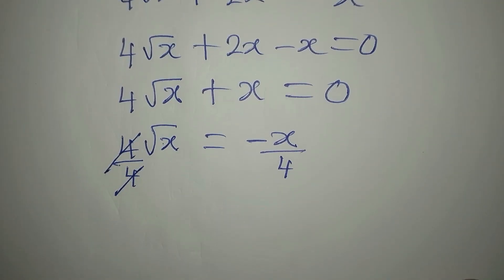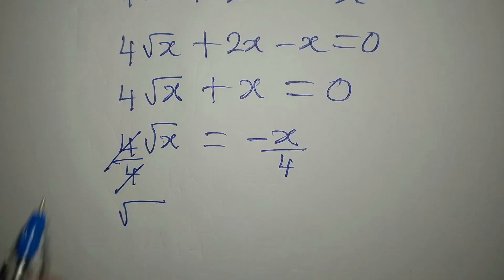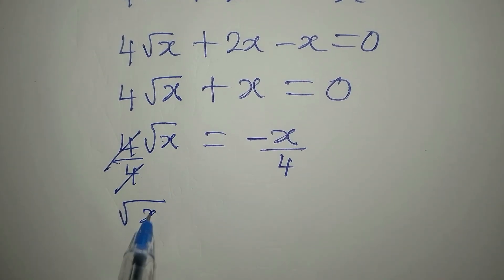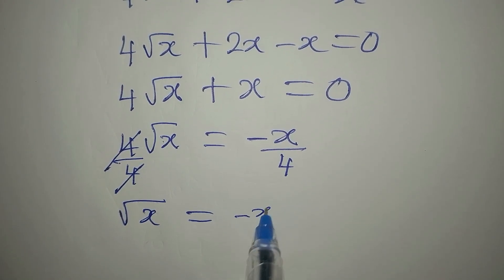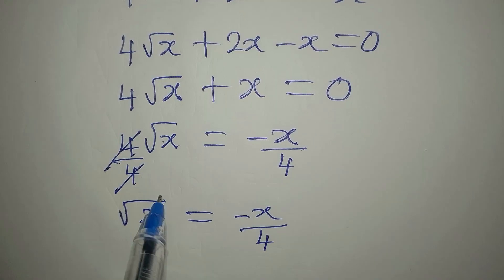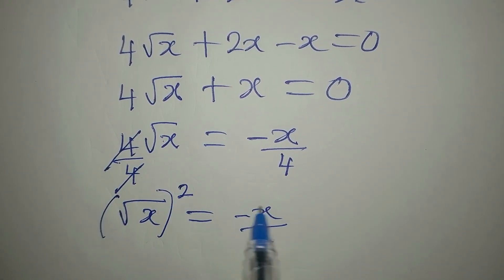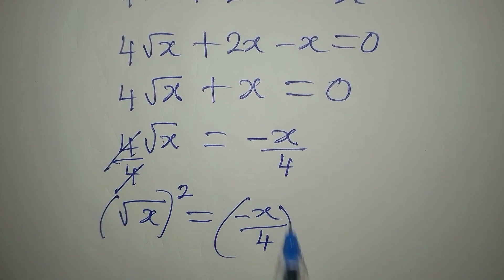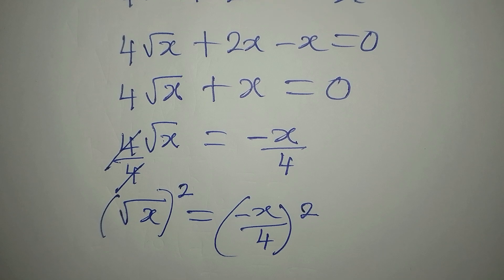Now let's divide by four so that root x is alone. We have root x equals negative x over four. At this point, to remove the square root, we square both sides.